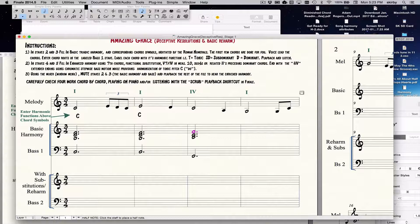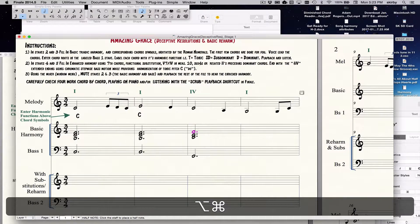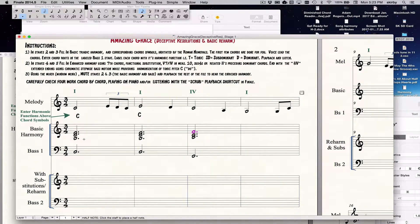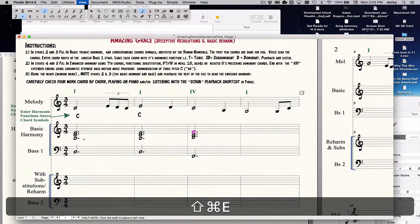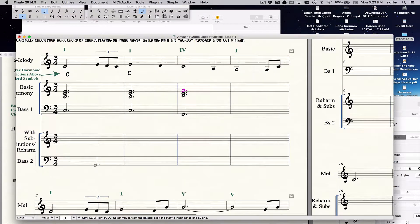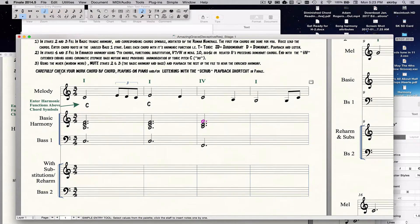In staves four and five, fill out the elaborated harmony with these particular parameters and limitations and guidelines. And then it tells them to mute staves two and three so they can hear staves four and five clearly. I would have showed them the shortcut to go to both the mixer tool so you can mute there and also the shortcut to go to studio view.